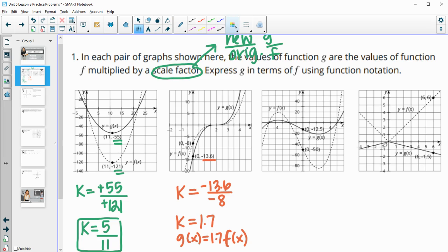Next one, our scale factor. The g value is negative 12.5 and the f value is negative 50. If you divide these you get 0.25 or 1/4. So our g function is equal to 1/4 times the f function.